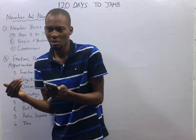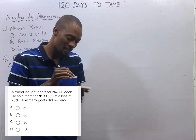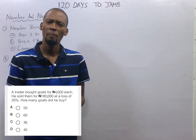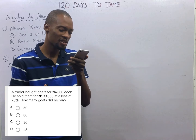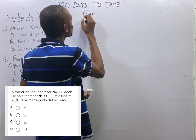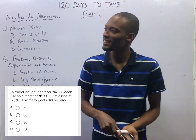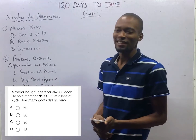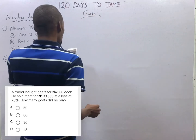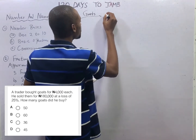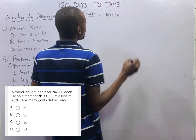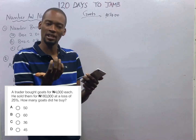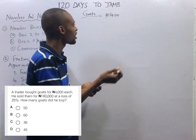This episode presents this question which says: a trader bought goats for 4,000 naira each. We don't know how many goats the trader bought, but to find that, irrespective of having a specific number, one of them equals 4,000 naira.